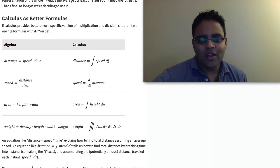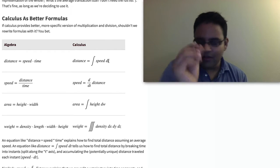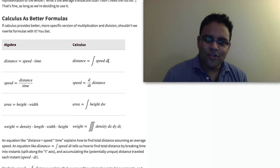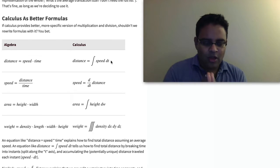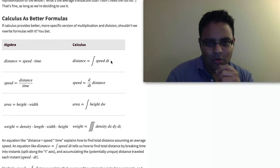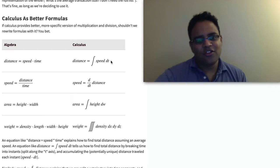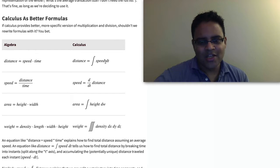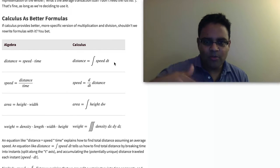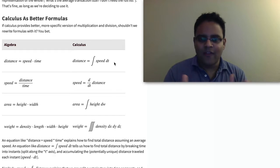That's the contribution to distance that that little instant makes. We basically add up a bunch of little contributions. At this second we're going this speed, the next second we're going the next speed, the next second we're going different speed. We add up all those contributions, and that's how we get distance. We don't need to use averages. If we have a changing speed, we can just integrate that and get the distance.